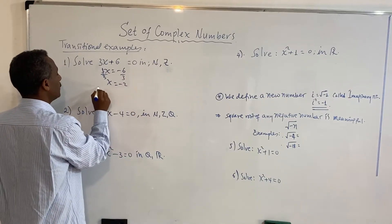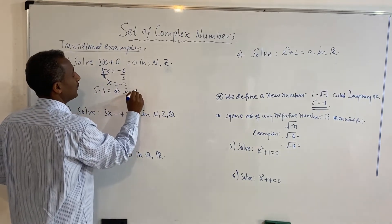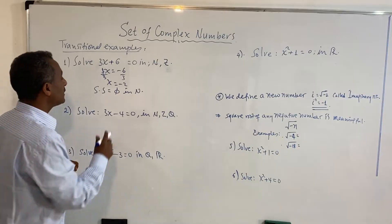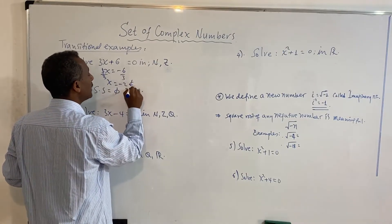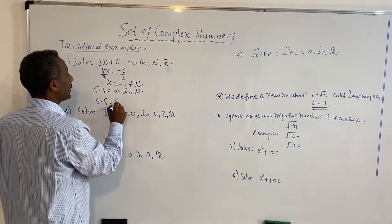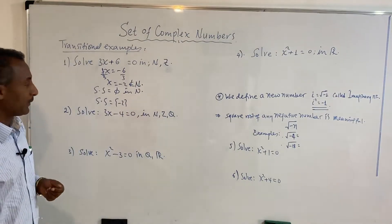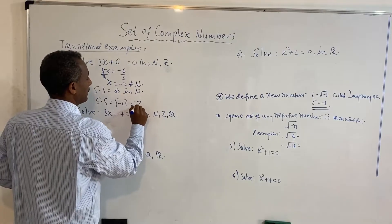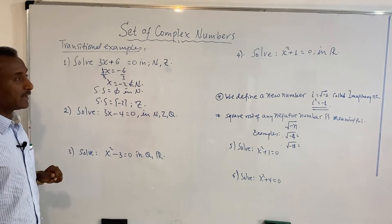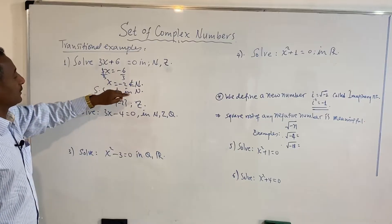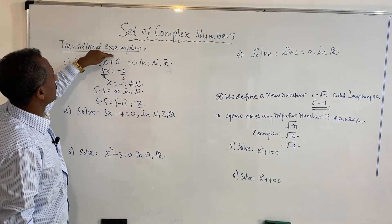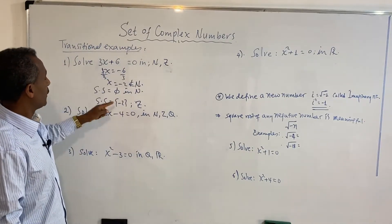So we say that the solution set is not in the natural numbers. The solution set is equal to negative two, but this is not an element of the natural numbers. The solution set has one element, which is negative 2, but it is not implicit in the natural number set.